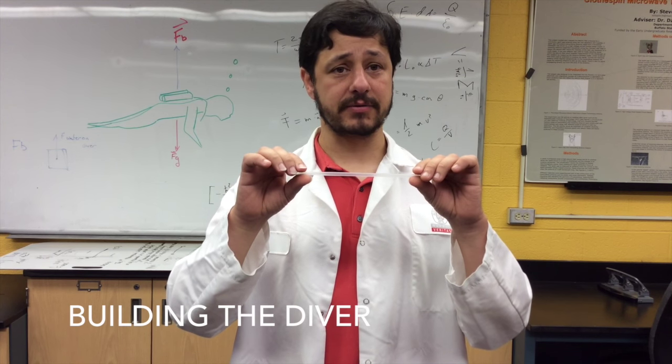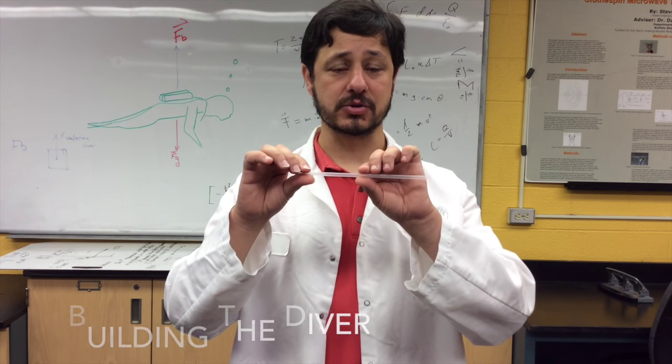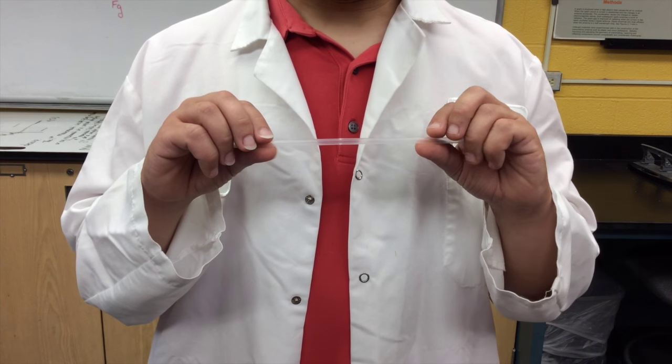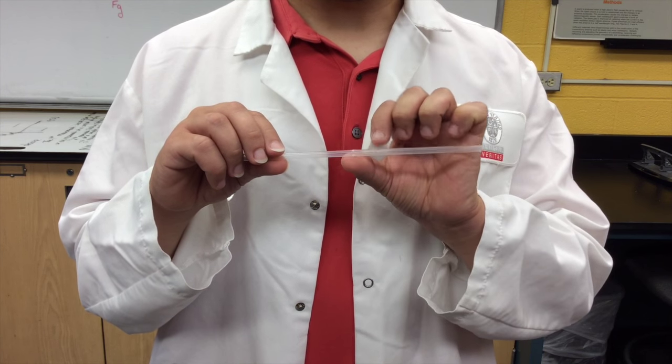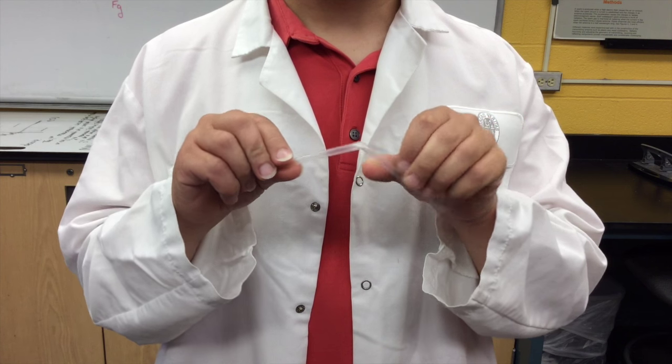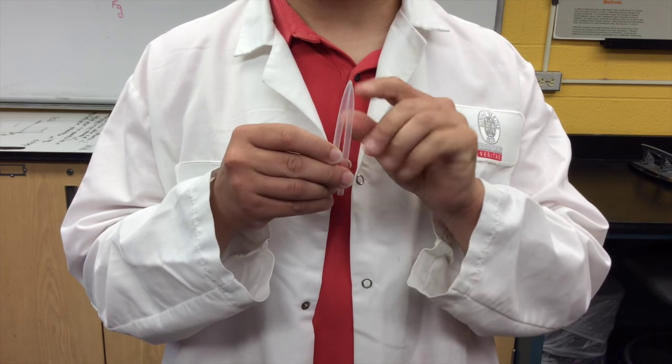So to create our Cartesian Diver, we're going to be trapping air in the straw, so we'll be folding it in half. When we fold our straw in half, it doesn't need to be exact, right about here. And just make sure there are no cracks.